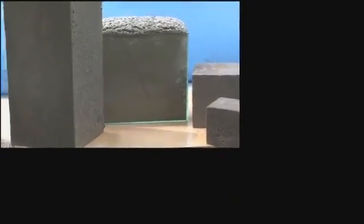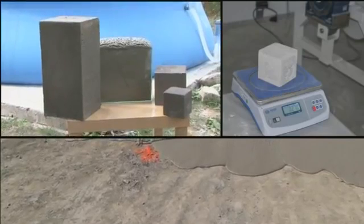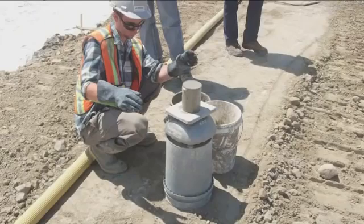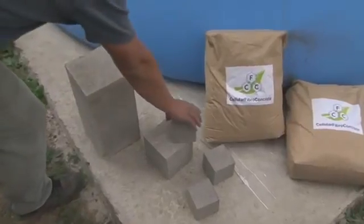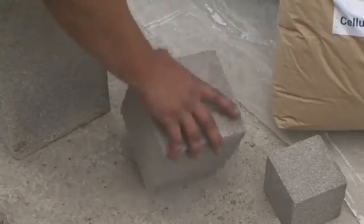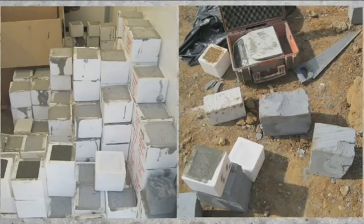Compared with traditional concrete, cellular or porous concrete is considerably lighter. Typical heavy concrete has a density of 2,400 kg per cubic meter, while cellular concrete can be made with various densities, from 250 to 1,400 kg per cubic meter.